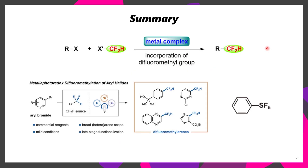So in summary, there's a number of different ways to install CF2H groups via transition metal cross-coupling. It's also possible to use metallophotoredox if you're looking for even greater selectivity. Finally, there's a number of different ways to make SF5-containing building blocks in organic chemistry. Hopefully this video has helped teach you some more interesting ways to install fluorine into your molecules. I hope this has been helpful, thanks for watching, and I hope you have a great day.